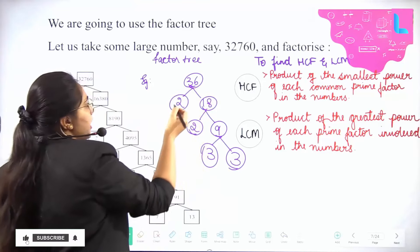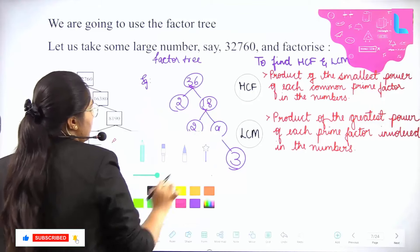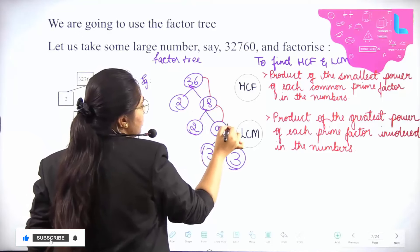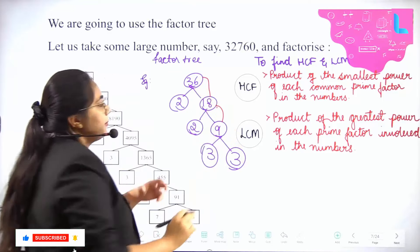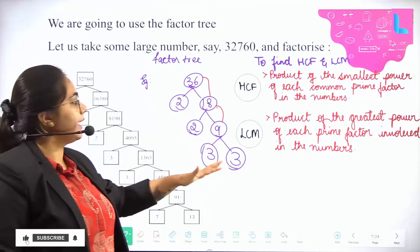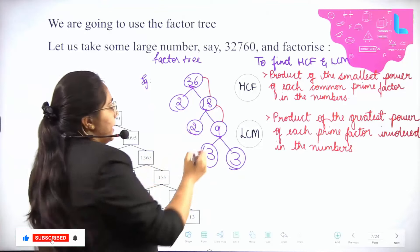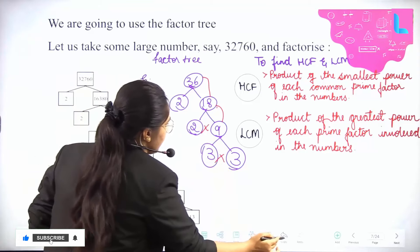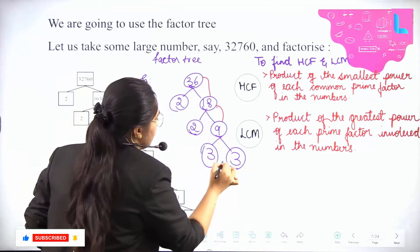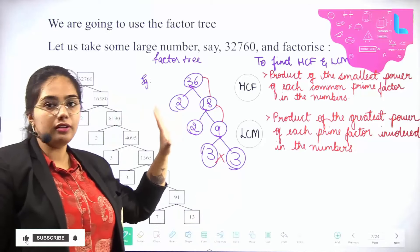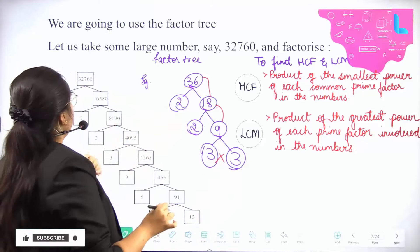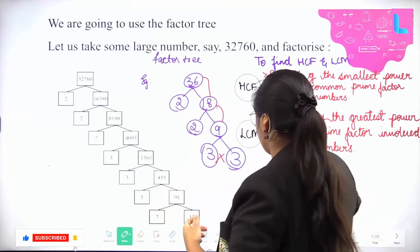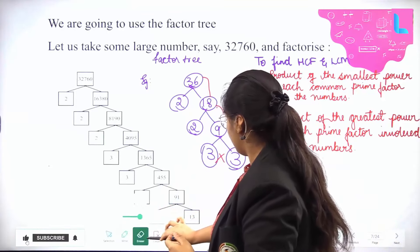Every composite number — 36, 18, and 9 are all composite numbers — should be further classified so that it is a product of primes. We have to keep substituting until everything is prime. For another example, which is also in your textbook, let me erase this and solve.